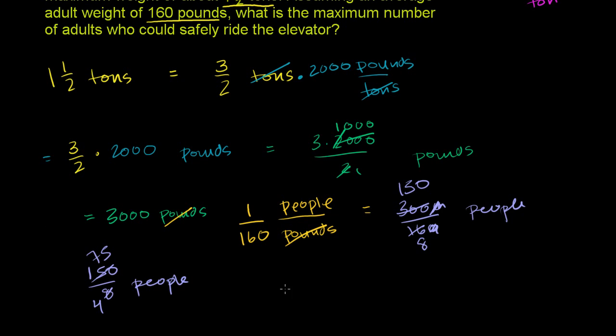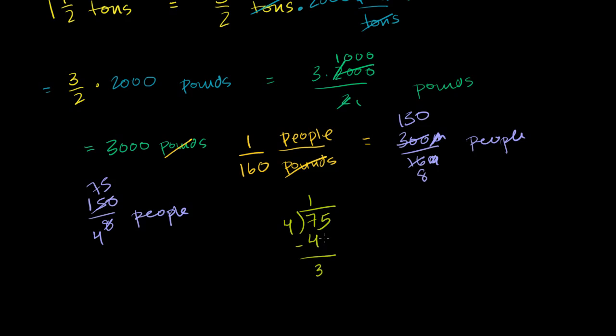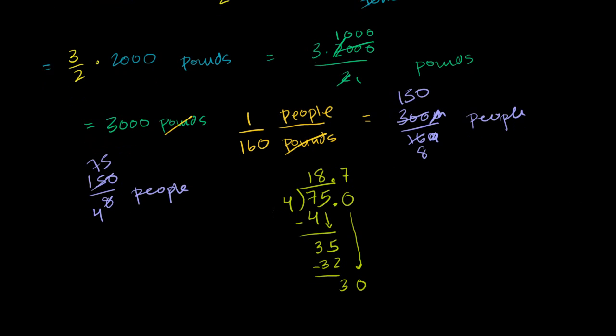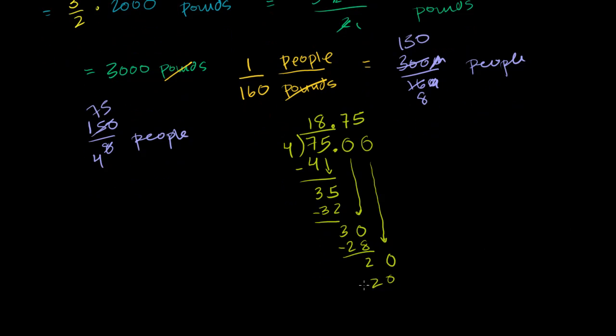Let me work out 75 divided by 4. 4 goes into 7 one time. 1 times 4 is 4. Subtract: 7 minus 4 is 3. Bring down the 5. 4 goes into 35 eight times. 8 times 4 is 32. Subtract: 5 minus 2 is 3. 4 goes into 30 seven times. 7 times 4 is 28. Subtract and get 2. Bring down another 0. 4 goes into 20 exactly 5 times, and we are done.